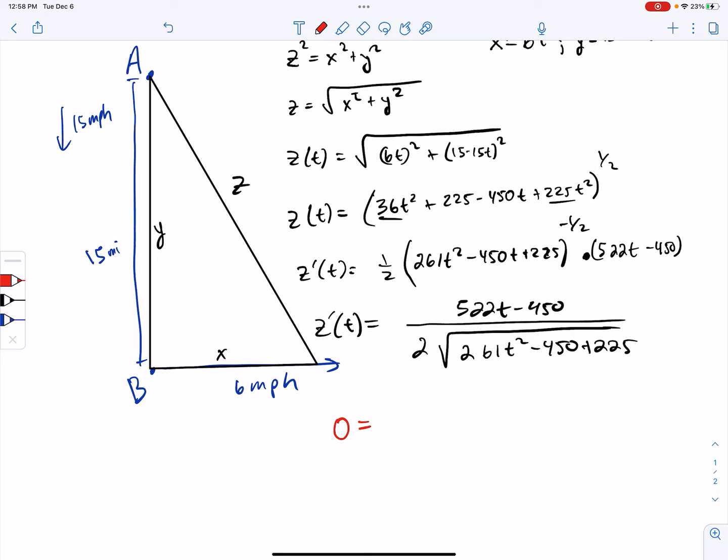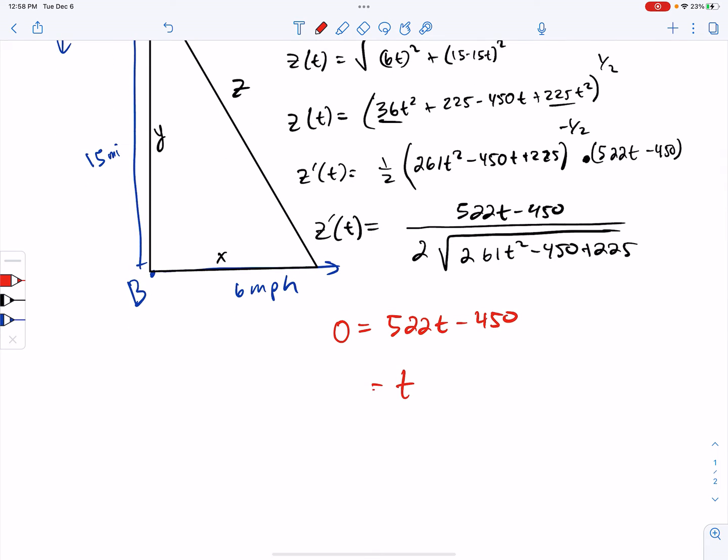And the good news is, I want to, a fraction equals zero when the numerator equals zero. So I'm really just solving this equation. So T is going to be 450 over 522.